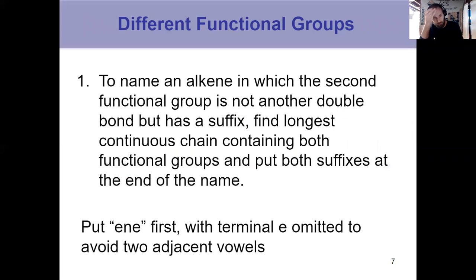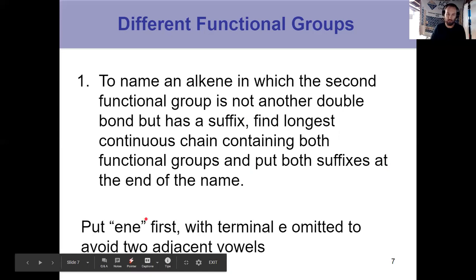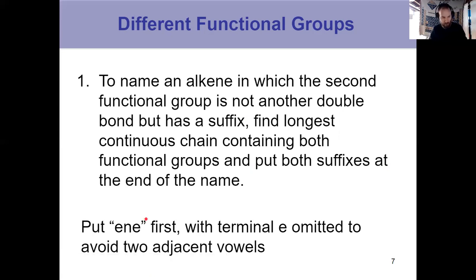So let's consider a couple of rules here. If I have an alkene with a second functional group, but it's not another double bond, because if it was just another double bond, I'd give it two numbers and call it a diene. In that case, two functional groups, both controlling the suffix, I have to find my longest continuous carbon chain that contains both of the functional groups. That's the key thing. If you're jotting down notes, underline that. Both functional groups. And then both suffixes go at the end of the name. We put in first for the alkene, drop the E at the end right there, because we don't like adjacent vowels in nomenclature, and then add the suffix for something like an alcohol, an OL, or an amine.